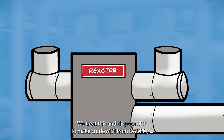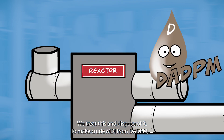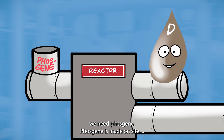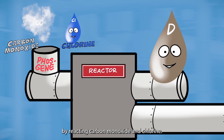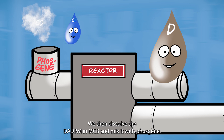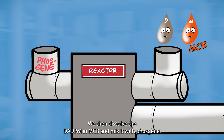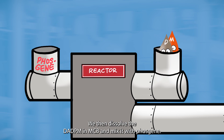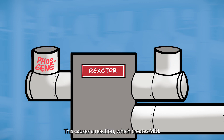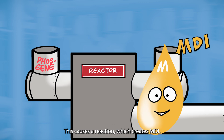To make crude MDI from DADPUM, we need phosgene. Phosgene is made on-site by reacting carbon monoxide and chlorine. We then dissolve the DADPUM in MCB and mix it with phosgene. This causes a reaction which creates MDI.